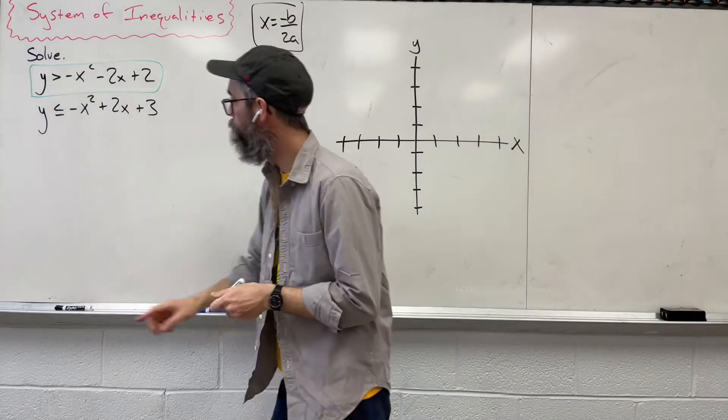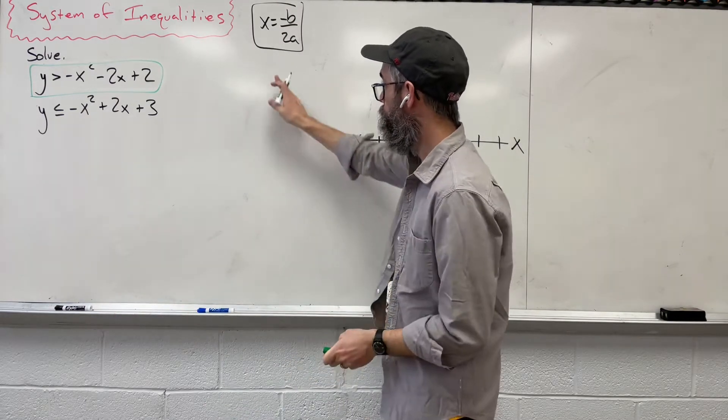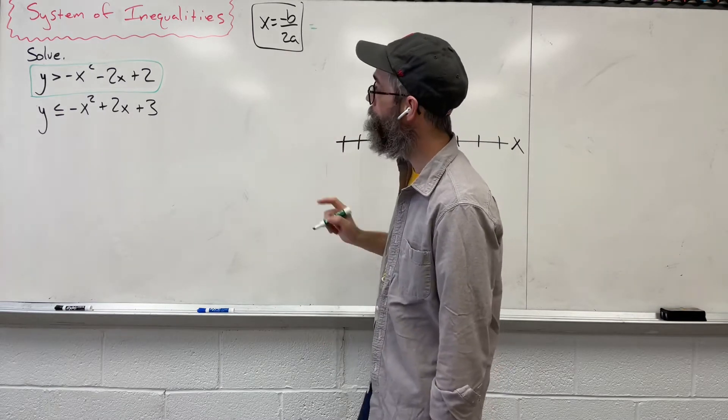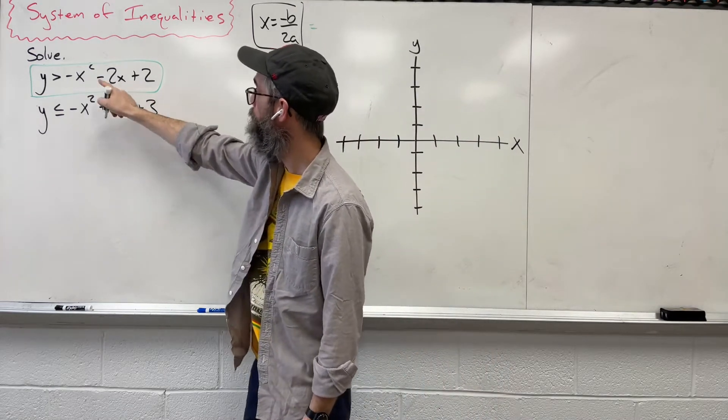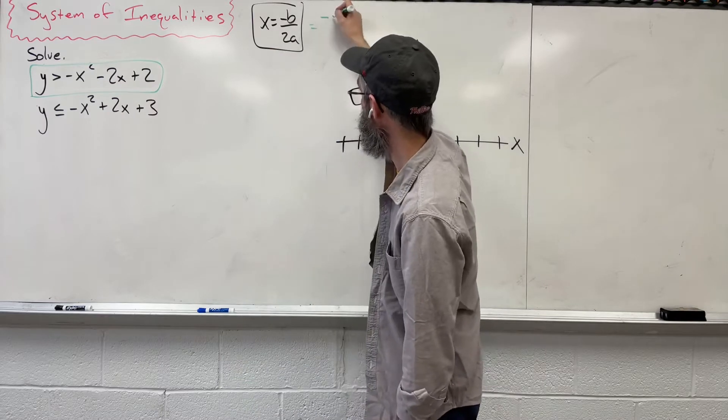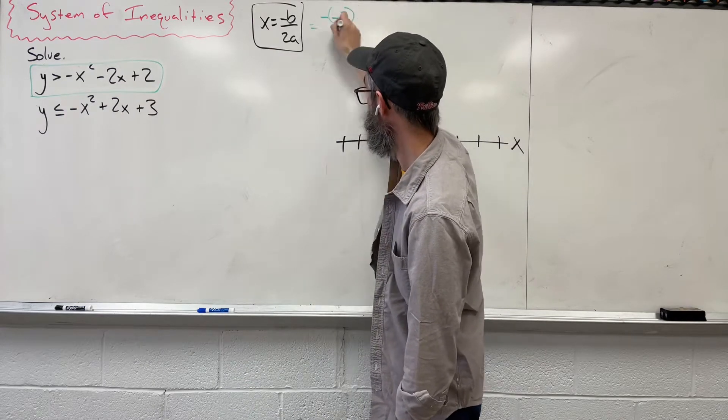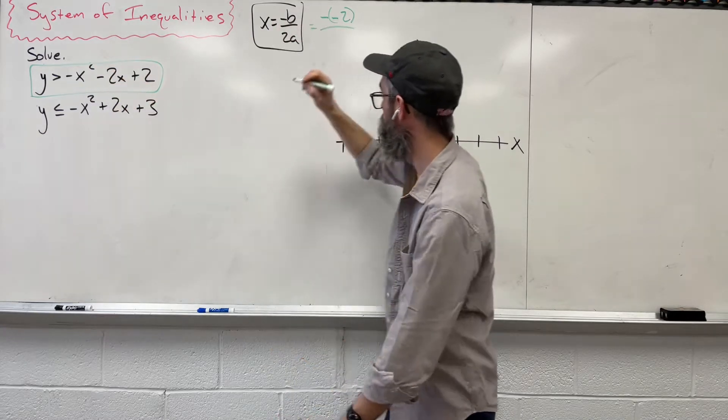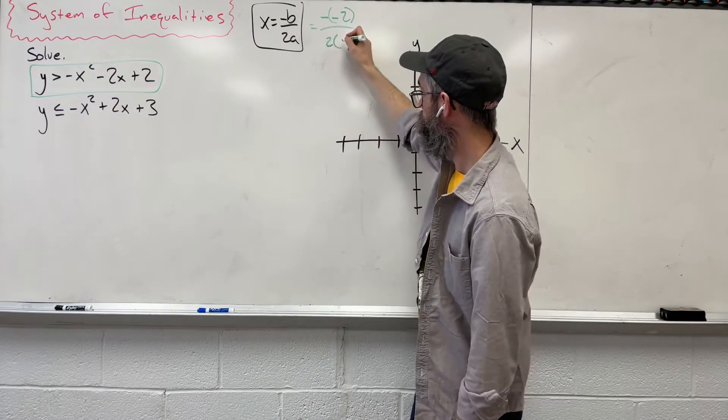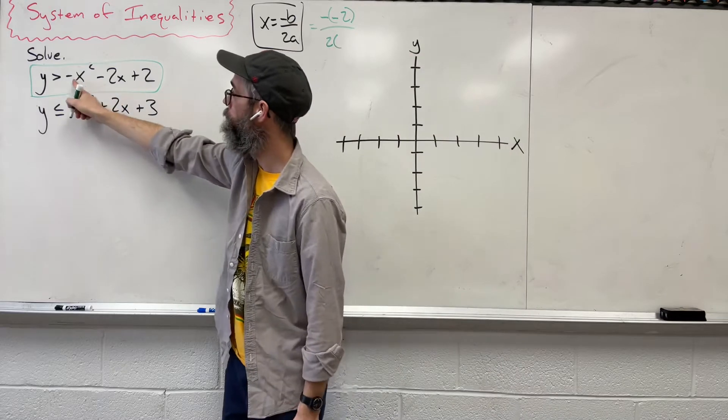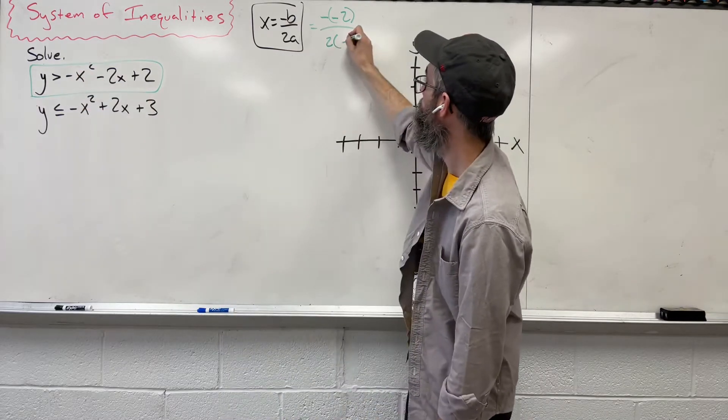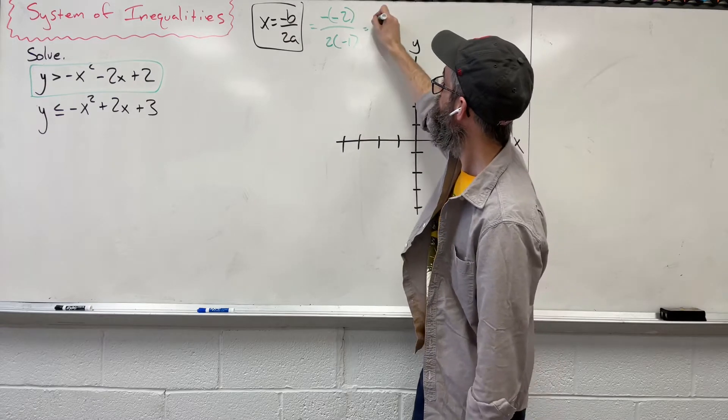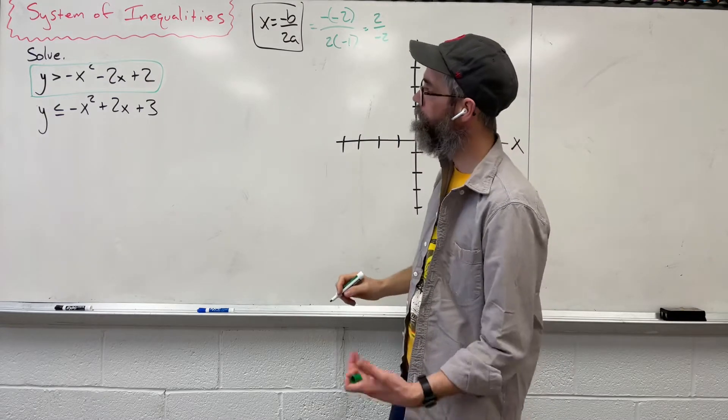That needs to be always in the picture here. So when we start plugging numbers in, my b value, the number in front of x, is negative 2. So we're going to have a negative negative 2. One negative comes from the formula, the second negative comes from the number. 2 times a, which is in front of x squared, in this case it's going to be negative 1. When we simplify that, you're going to get 2 over negative 2, which is negative 1.